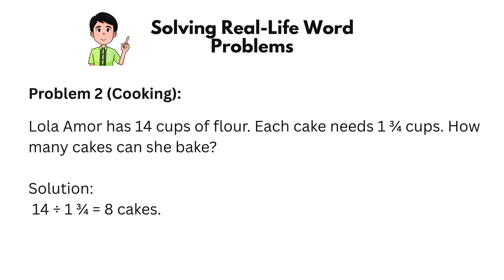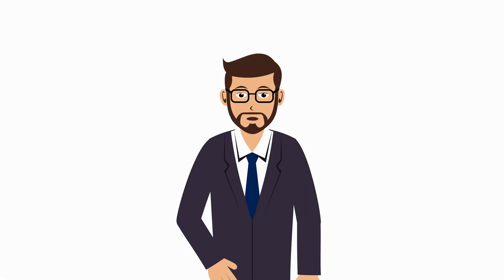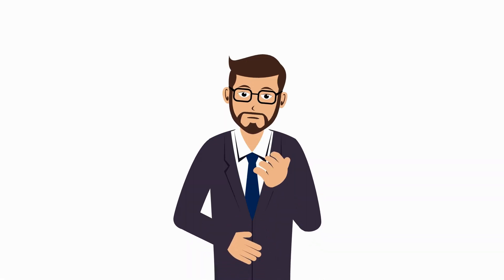Problem 2: Cooking. Lola Amor has 14 cups of flour. Each cake needs 1 and 3 quarters cups. How many cakes can she bake? Solution: 14 divided by 1 and 3 quarters equals 8 cakes. Why do you think accurate measurements are important when cooking or taking medicine?